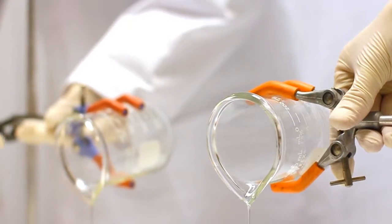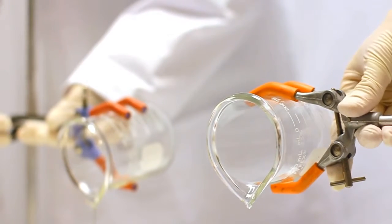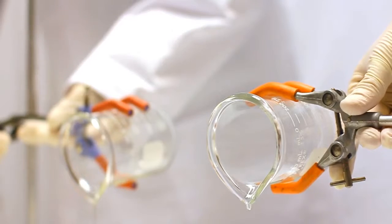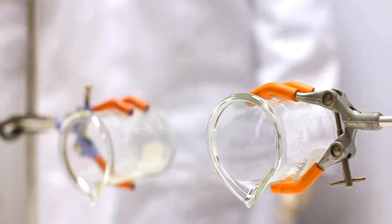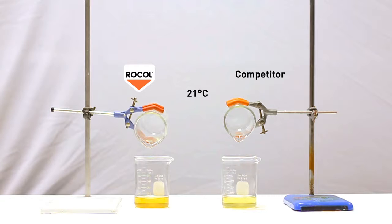The pour point is therefore an important factor to consider for low temperature systems so that there won't be any operational issues caused by lubricants not flowing. Pour point is measured by the ASTM D97 and ASTM D5950 standard test procedures.